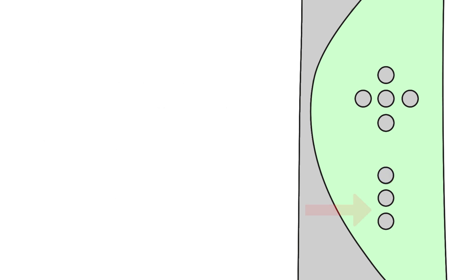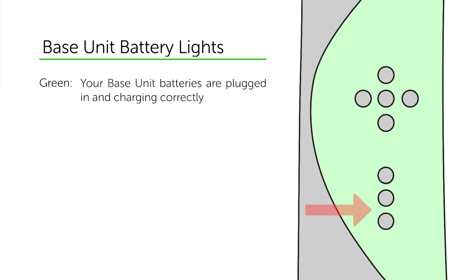The last two lights on your display panel are the base unit battery lights. These should only flash on when you are correctly charging your Omeo base unit's batteries. They will flash when your machine is fully charged.